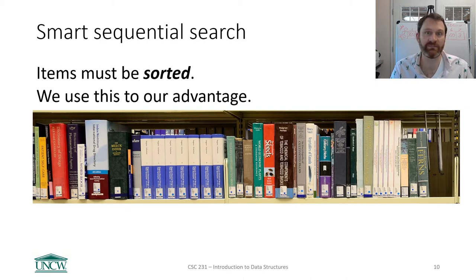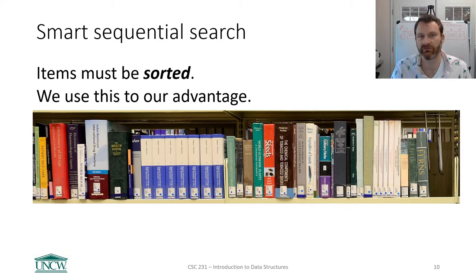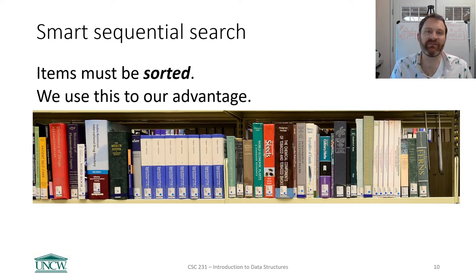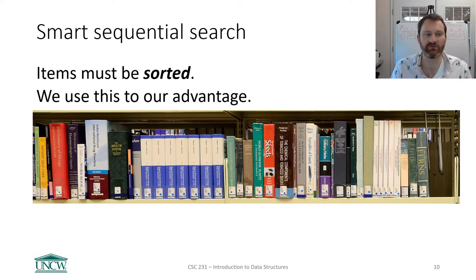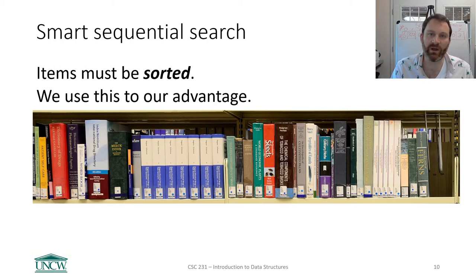Most items can be sorted. Strings have an alphabetical order; integers and floats have a numeric order. But if we have these things sorted ahead of time, we can use this to our advantage. This might be, for example, a way that you search through library books on the bookshelf.